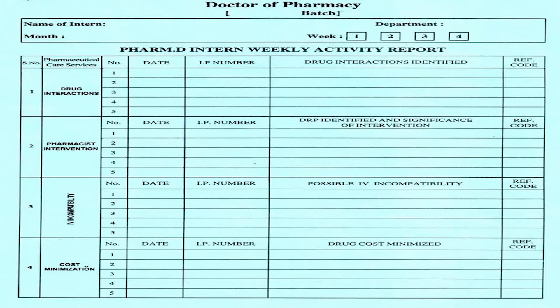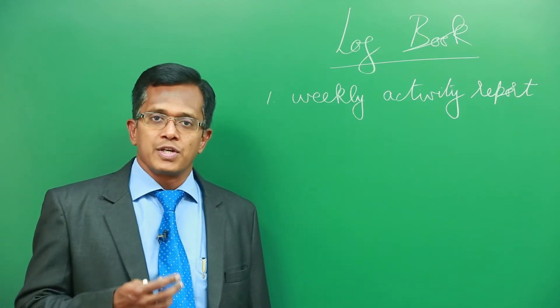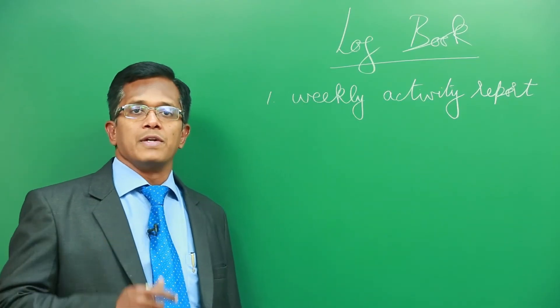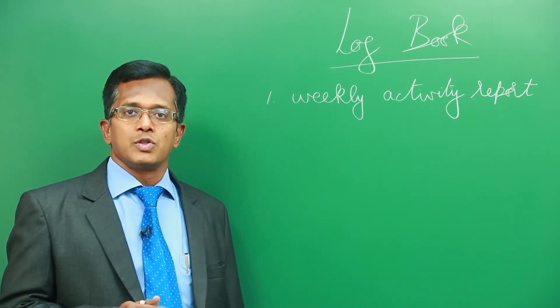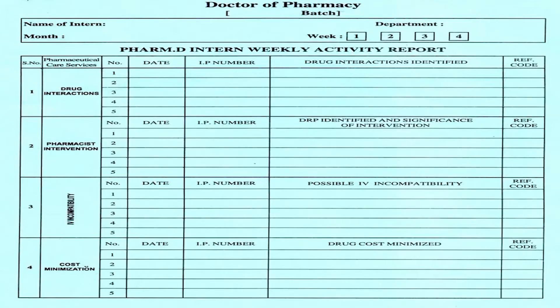For example, in the format, the pharmaceutical care services are listed down. Number one: drug interactions — which IP number, that is for which patient in that particular department, they have taken the prescription to analyze the drug interactions. Pharmacist intervention: if the pharmacist has done any intervention in that particular department on that particular date, it should be mentioned in the weekly activity report.